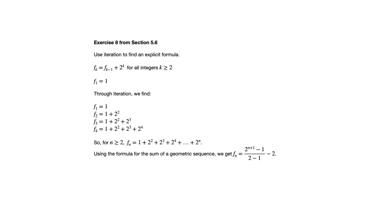So we've got F sub n equals — using the sum of a geometric sequence formula — 2 to the n plus 1 minus 1 over 2 minus 1, and then from that whole thing we subtract 2 to account for that missing term. We're dividing by 2 minus 1, which is just 1, so we can simplify nicely to F sub n equals 2 to the n plus 1 minus 3. You can check this by going back and verifying those terms we generated match this explicit formula.